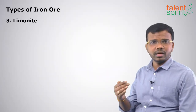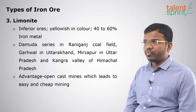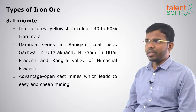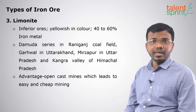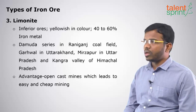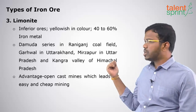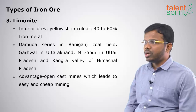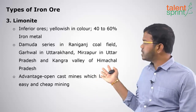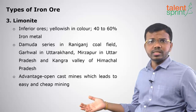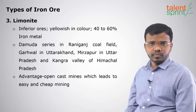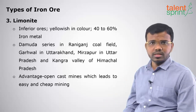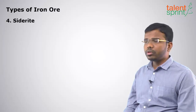The third type is limonite, an inferior third-grade ore. It has 40 to 60 percent iron and is yellowish in color. It is found in the Damodar series in Raniganj in West Bengal, Garhwal in Uttarakhand, Mirzapur in Uttar Pradesh, and the Kangra Valley of Himachal Pradesh. An advantage of limonite is that it is open cast mine — it is open to nature, not underground, so it can be easily mined.